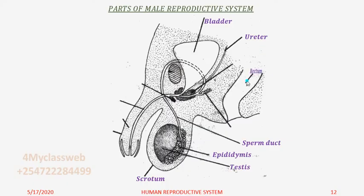There is also this other part here that we call the rectum, where undigested food is stored before it leaves the body through the anus. Now I want to state that the bladder, ureter, and the rectum are not part of the male reproductive system. They are only organs which are located next to the main parts of the male reproductive organs.